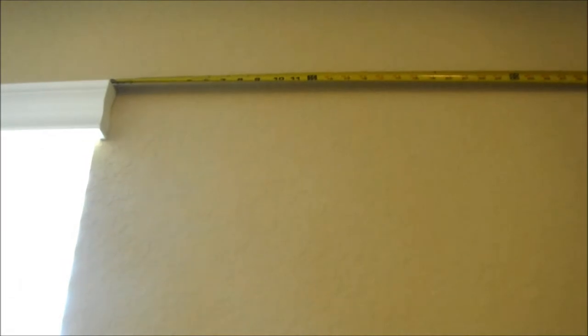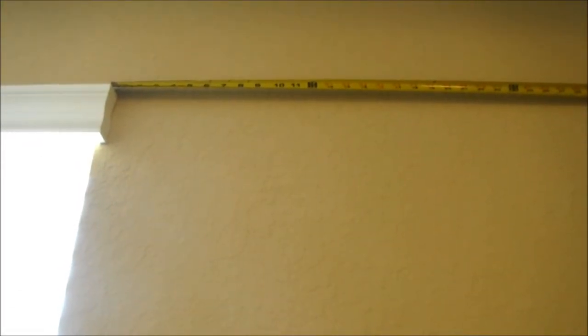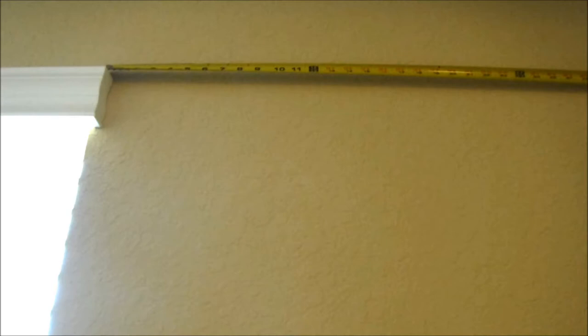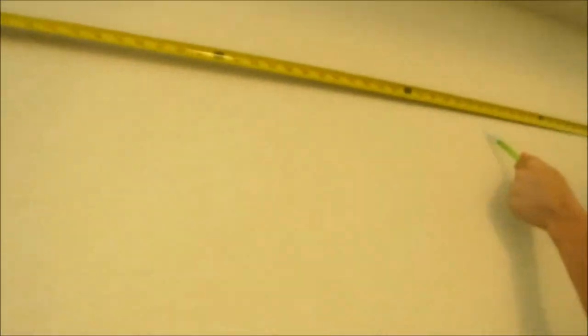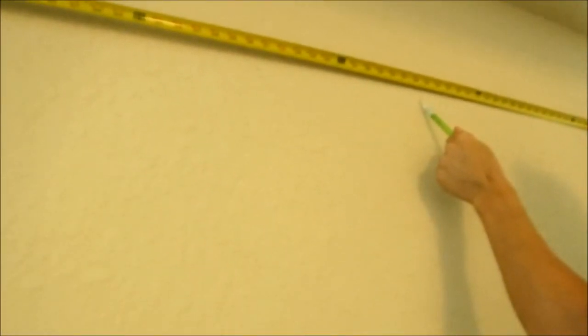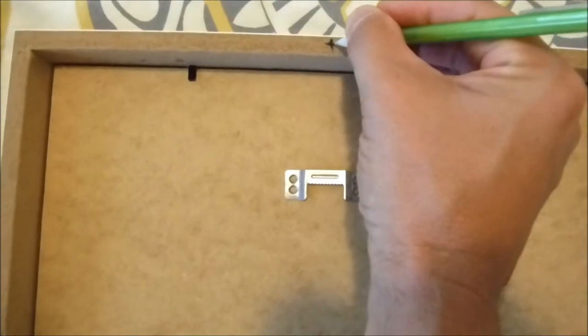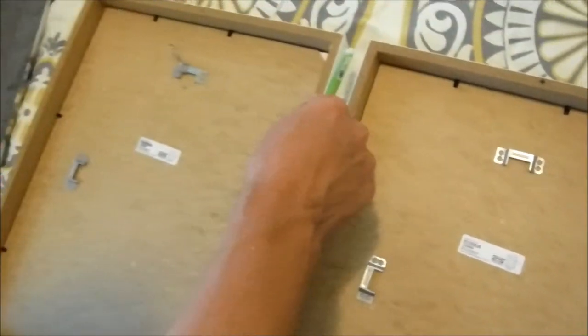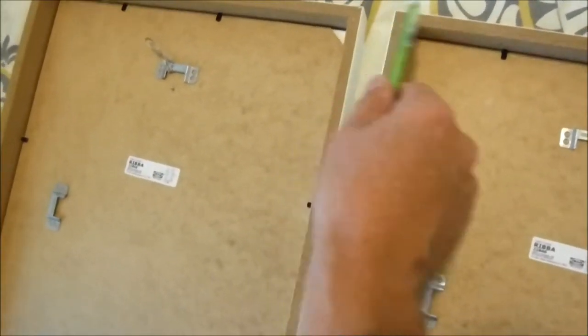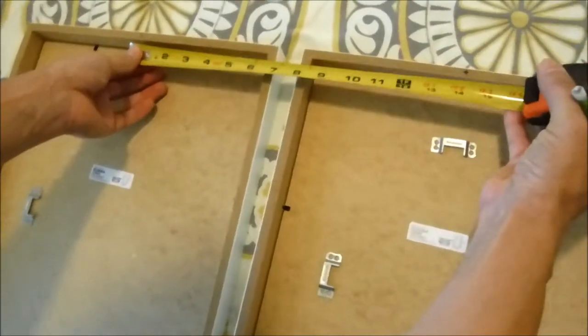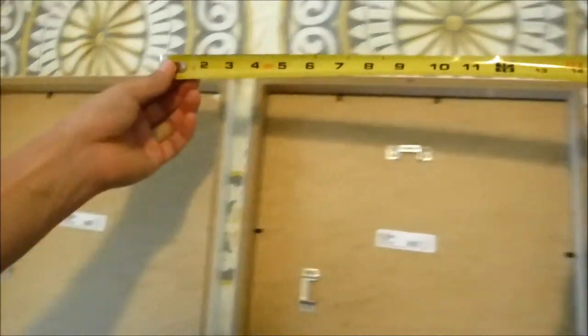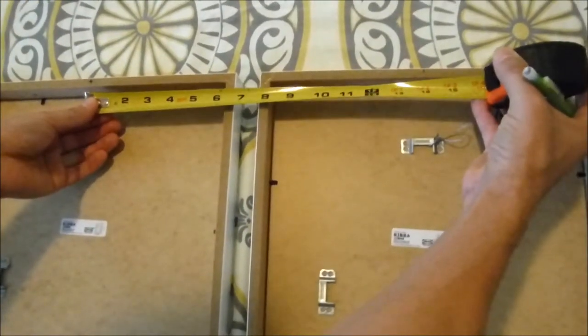So first you want to mark your center mark from wall to wall or in my case window to window. What you can do is mark the center of your picture frames to get the correct spacing that you want or get the correct measurement that you want so you can mark the mark on your wall.